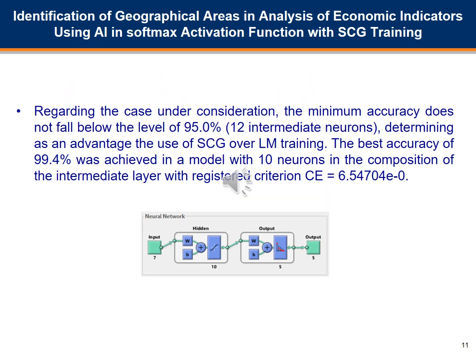Regarding the case under consideration, the minimum accuracy does not fall below 95%, determining as an advantage the use of scaled conjugate gradient over Levenberg-Marquardt training. The best accuracy of 99.4% was achieved in a model with 10 neurons in the hidden layer.